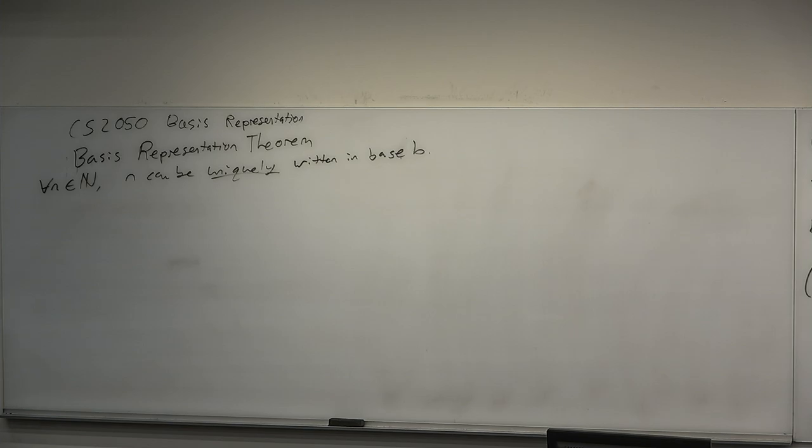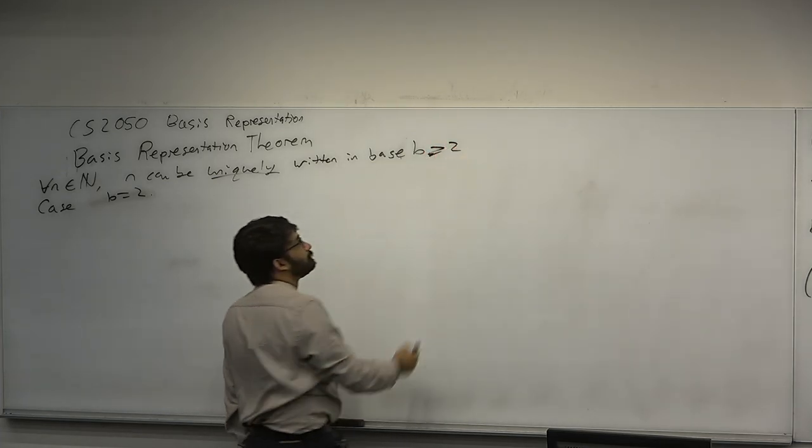Now, the cool thing about proof is it can confirm what are your own suspicions. You should suspect that there's only one way to write a number in any base, base 2, base 10, whatever. There shouldn't be two ways to write a number. In fact, you can confirm that. We're going to do a weaker form of this and we'll do the case of b is equal to 2. We don't have too many powerful tools of modular arithmetic yet, so we'll do the special case of the base is equal to 2. Any number can be uniquely written in binary. Also, the base must be greater than or equal to 2. Right.